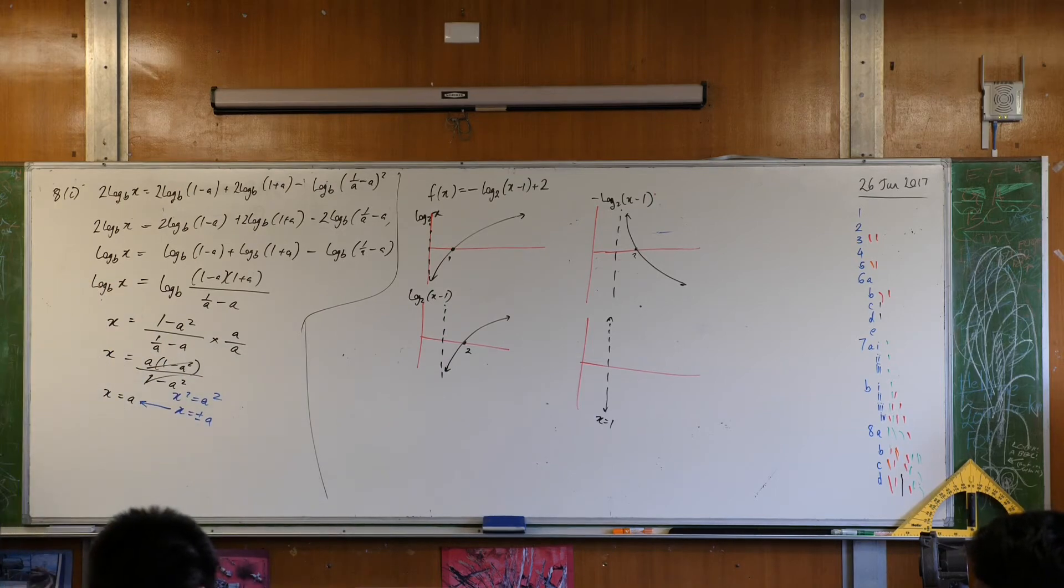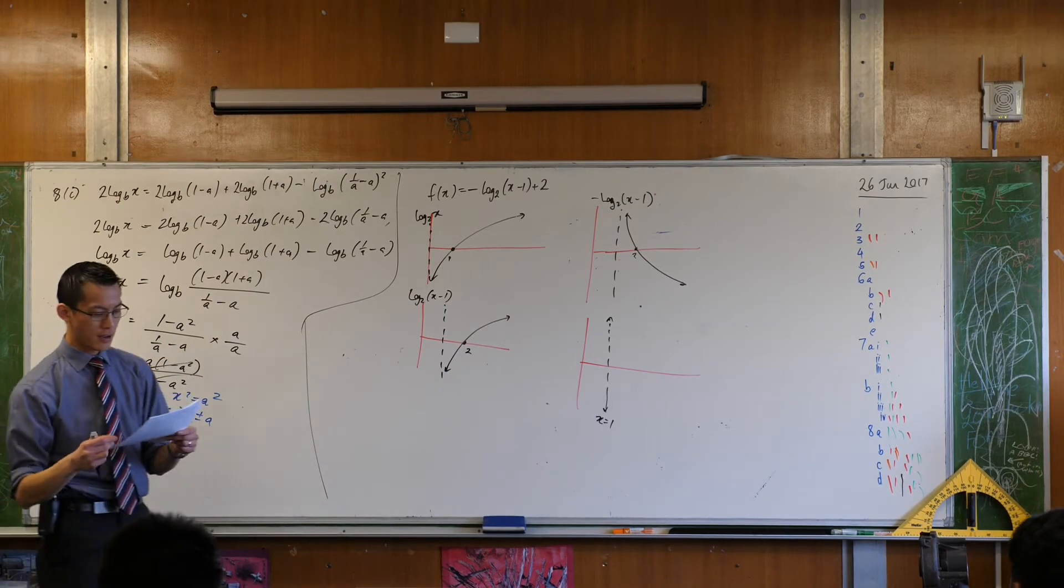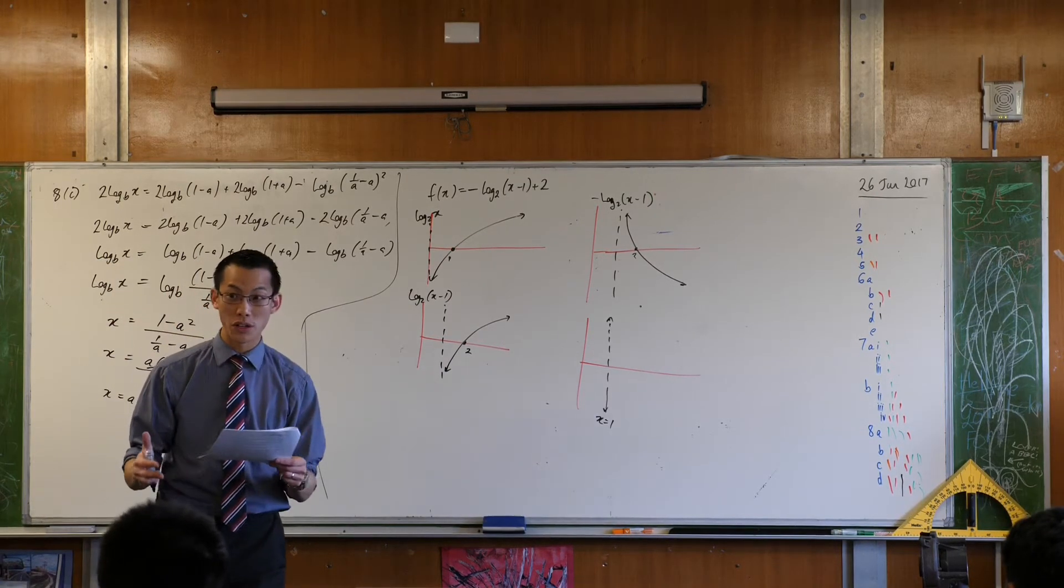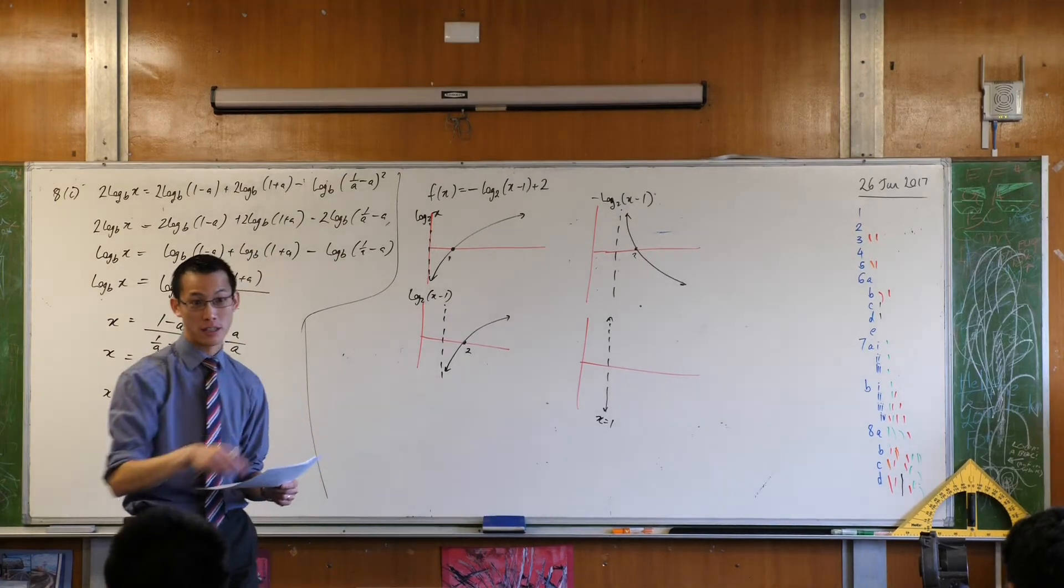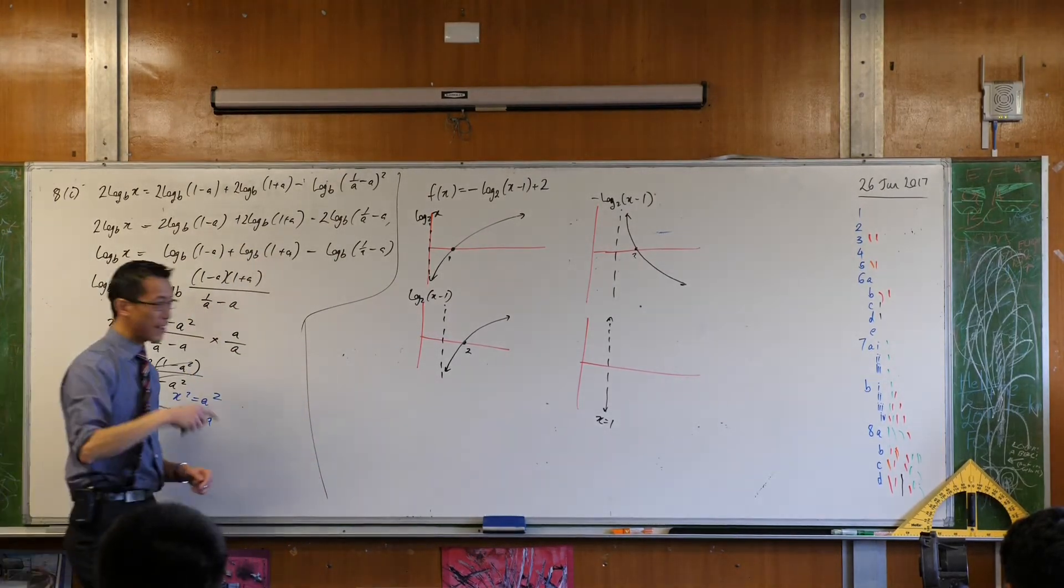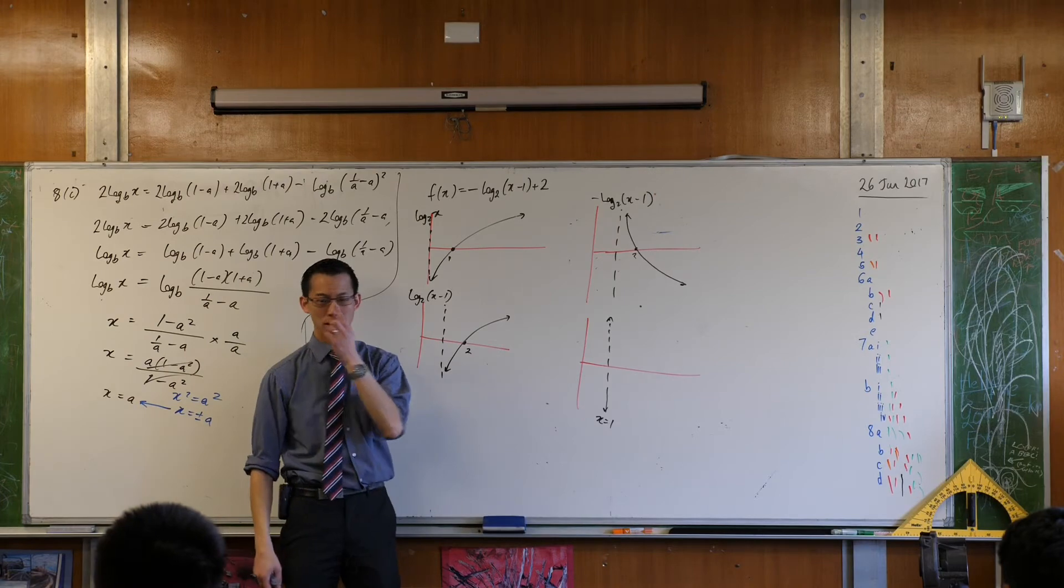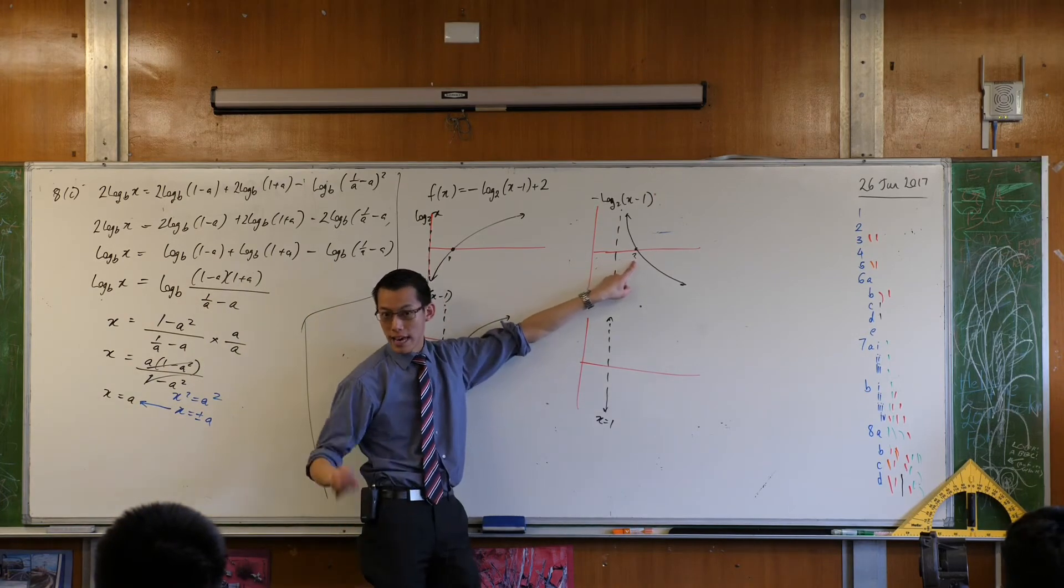The question very helpfully, it even reminds you, hey, give me two points with the exact coordinates. It reminds you that's an important thing to put on the graph. Okay. Now, thankfully, we already have one of those points because look, you told me for this one, the x intercept was 2.